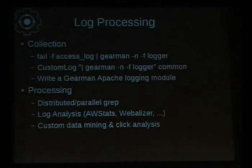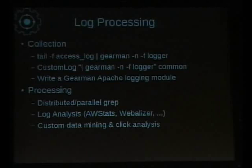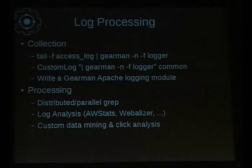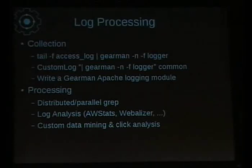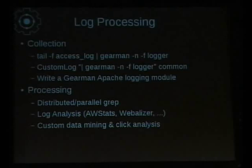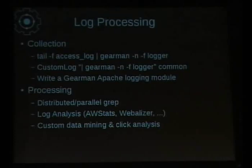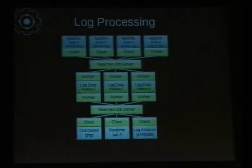To do this, you can simply tail-f the access log, pipe it into the Gearman client, and it'll treat every line coming from that file as a new job. That's the simplest way — just run that at startup. You can also do a custom log entry in your Apache config doing essentially the same thing, or if you're really ambitious and want filtering or pre-processing before shipping to Gearman, you could write a Gearman Apache logging module. Then once you've stored all that data and want to process it, you could do distributed grep, merge all those logs for something like awstats, or build real-time stream analysis tools on top of it.